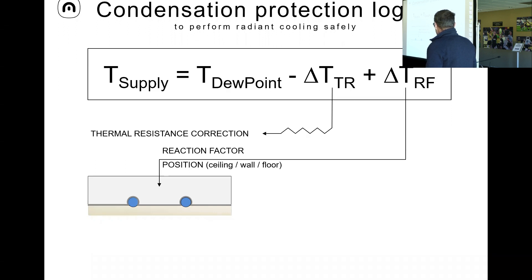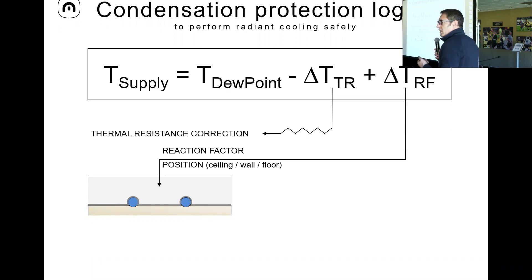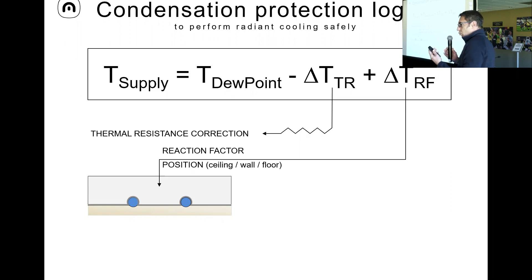If we want to be very close to the dew point at 18°C, the delta T through the gypsum is about 5 degrees, so 18 minus 5 equals 13 degrees — we could potentially push 13 degrees into the system and get 17 degrees on the surface, very close to the dew point. But we don't want to do that. We need to keep a safety distance, and this reaction factor is that safety distance.